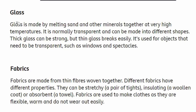Glass is made by melting sand and other minerals together at very high temperatures. It is normally transparent and can be made into different shapes. Glass can be strong, but thin glass breaks easily. It is used for objects that need to be transparent, such as windows and spectacles.